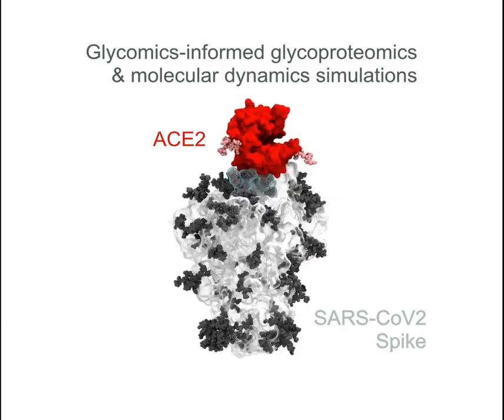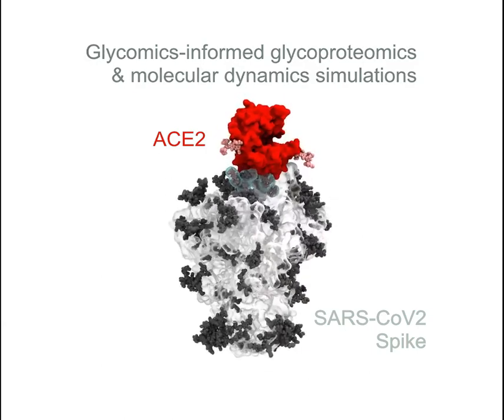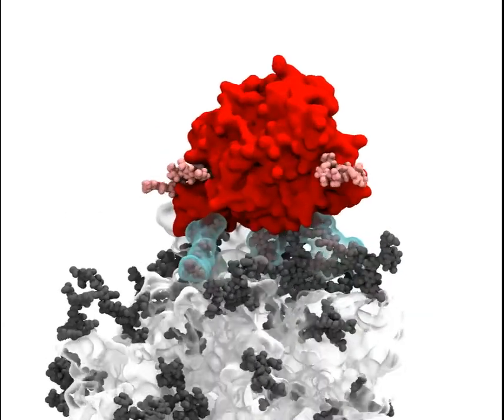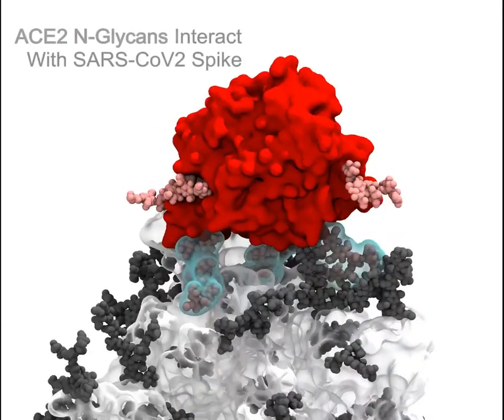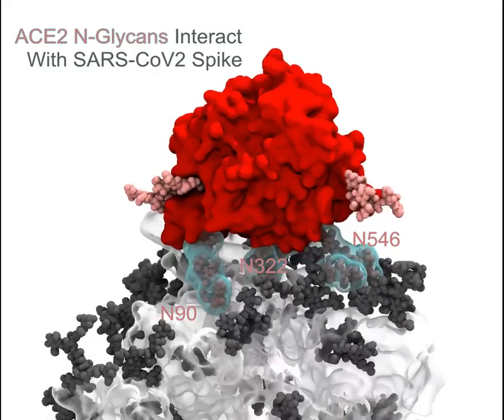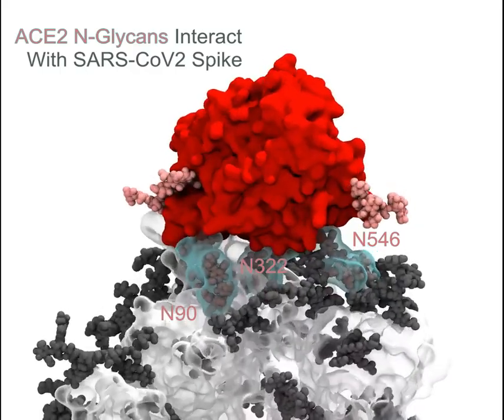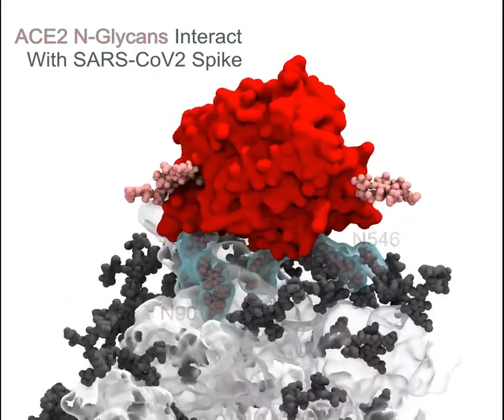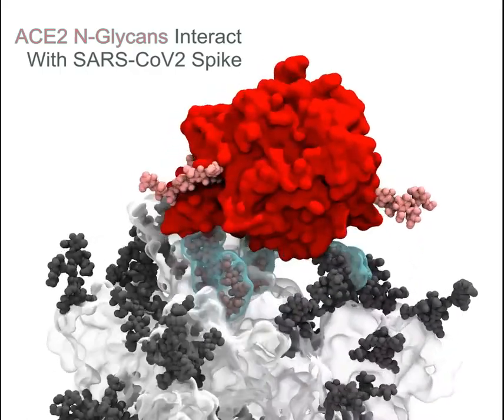Using GlycomixInform Glycoproteomics, we found in molecular dynamics simulations that three of the glycans on ACE2 — N90, N322, and N546 — extensively interact with the spike protein and its glycans.